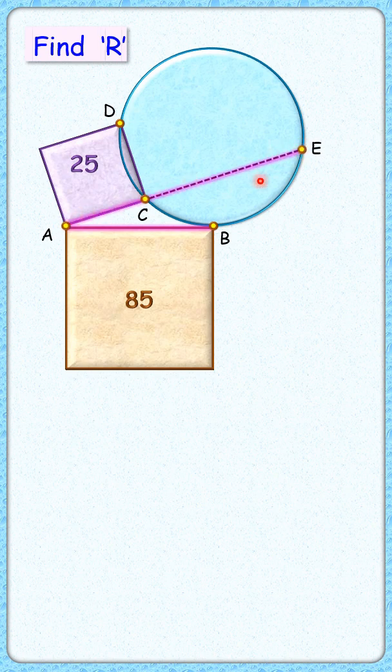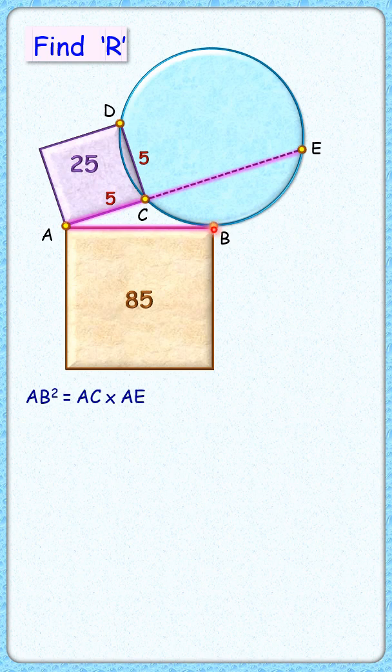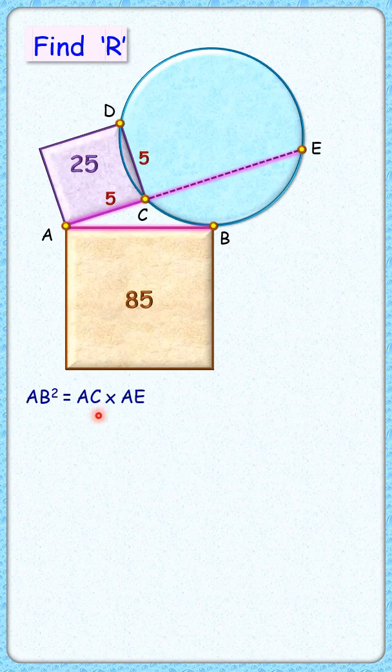Applying the tangent-secant theorem, we get AB² = AC × AE, where AC is the side length of the square, or 5 centimeters, and AB² is the area of the brown square, which is 85. Putting these values, we get 85 = 5 × AE.